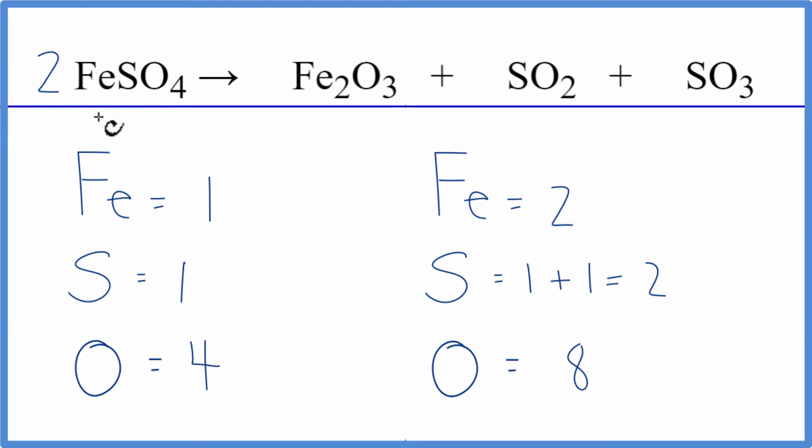So now we have one times two. That gives us two. So the irons are balanced. Sulfurs, one times two. Those are balanced. And then the oxygen, four times two. That gives us eight. And the oxygens are balanced.